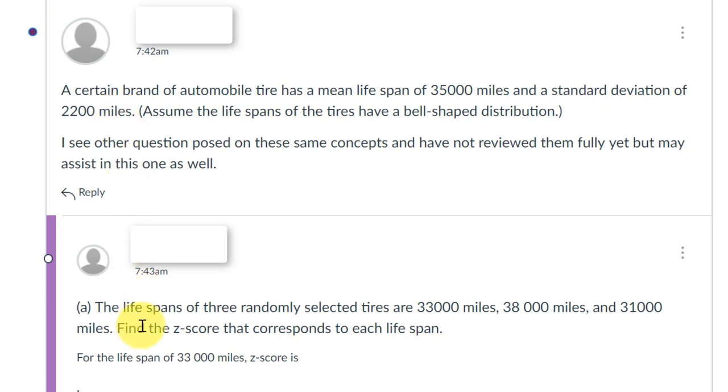Now the particular part of the question is that there are three randomly selected tires, which is important, with 33,000 mile lifespan, 38,000 mile lifespan, and 31,000 mile lifespan. And we need to find the Z scores for each of those.